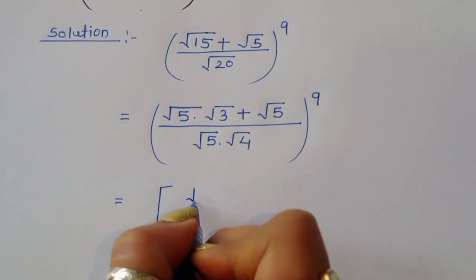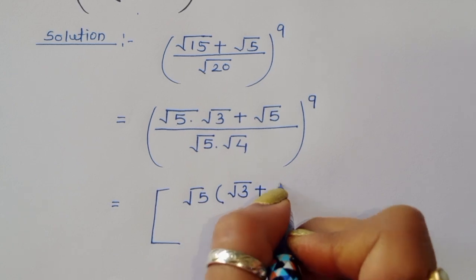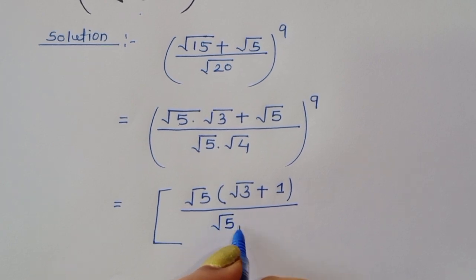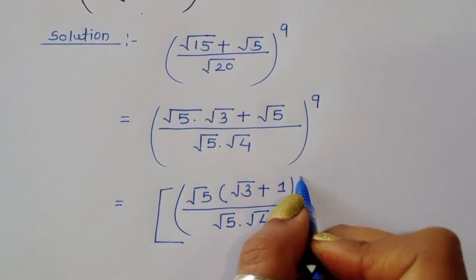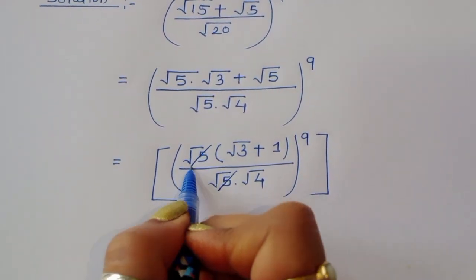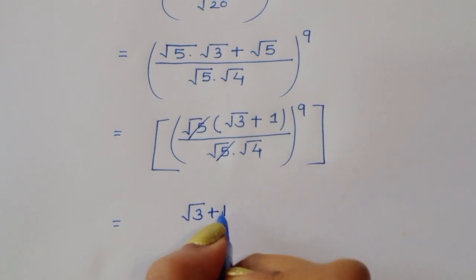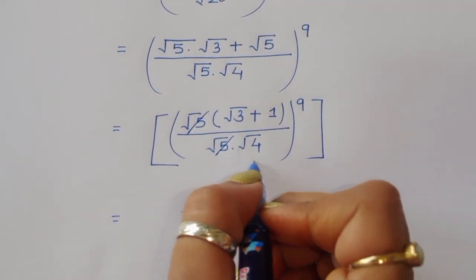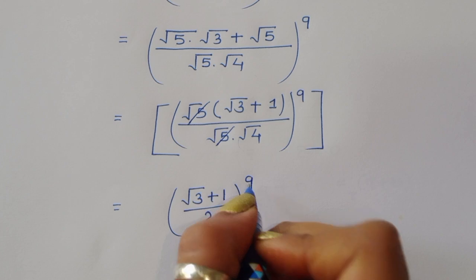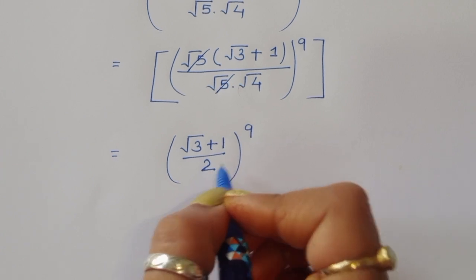Taking square root of 5 common, we get square root of 3 plus 1, divided by square root of 5 times square root of 4, to the power 9. Now square root of 5 and square root of 5 cancel. The remaining term is square root of 3 plus 1, divided by square root of 4. Since square root of 4 equals 2, we have square root of 3 plus 1 divided by 2, all to the power 9.